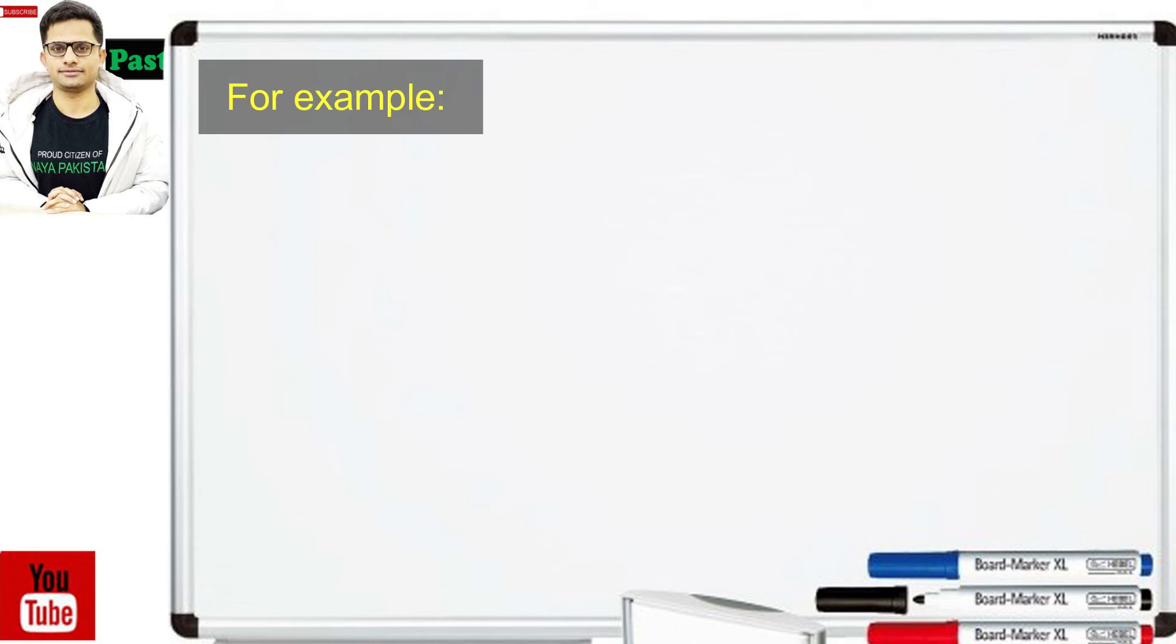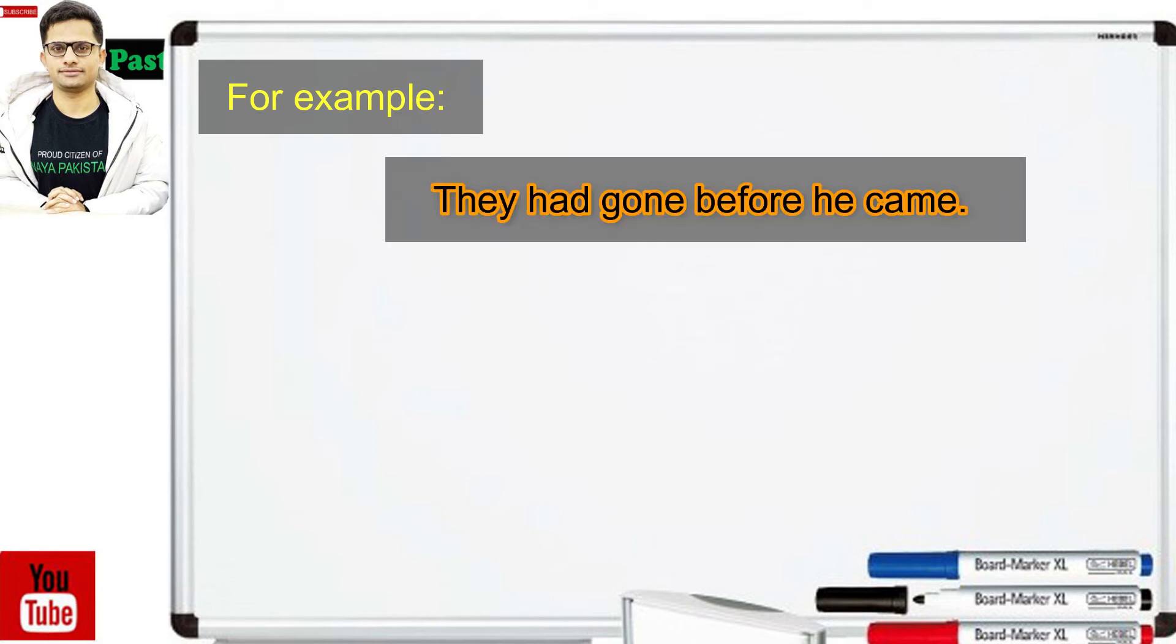For example, they had gone before he came. They had gone یہ first action ہے, he came second action ہے. They had gone past perfect tense ہے وہ جا چکے تھے before he came اس کے آنے سے پہلے. First action یہ ہے کہ وہ جا چکے تھے, دوسرا action یہ ہے کہ اس کے آنے سے پہلے. First action میں past perfect tense کا استعمال کیا جا رہا ہے, second action جو ہے وہ اس میں past simple tense ہے.